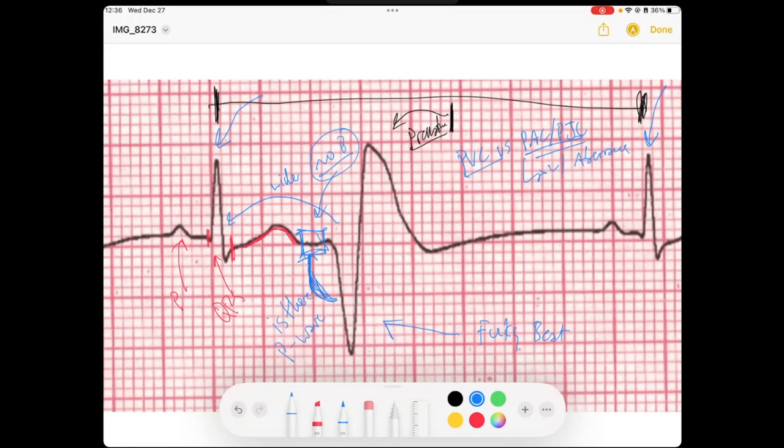And so we can then say that this wide complex QRS with this funky T wave, because we know that this is a PVC. We're going to say this is a PVC.